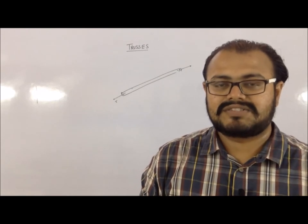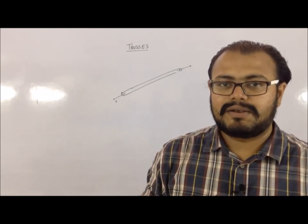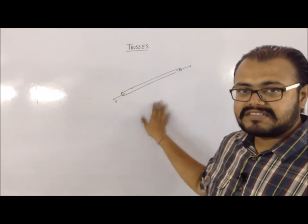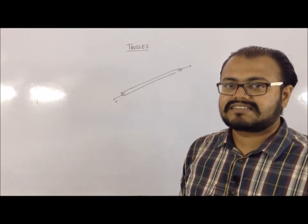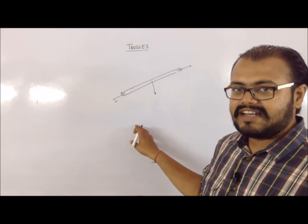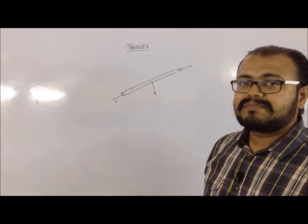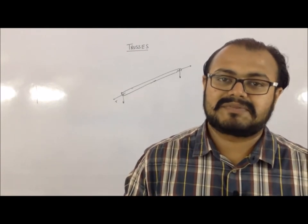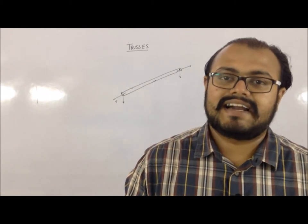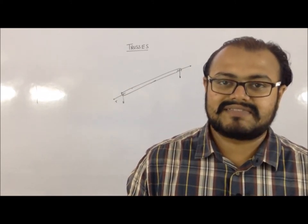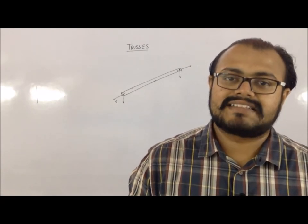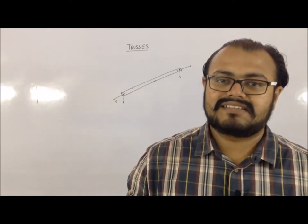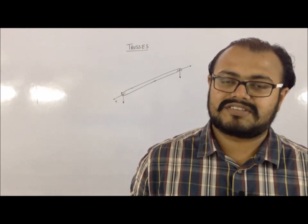When designing a truss, loads must not fall at the center of a member because members cannot sustain large lateral stress between joints. Whenever a truss has to withstand distributed loads, those loads are distributed at the joints. This is done using a floor system connected with floor beams and stringers, which transmit the floor load to the truss joints.